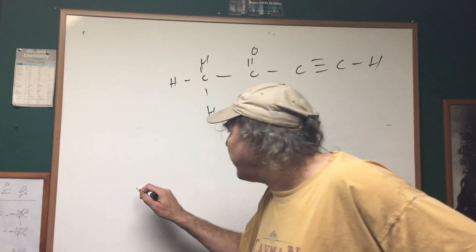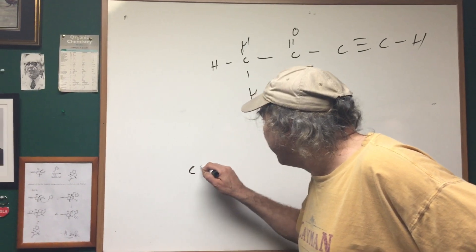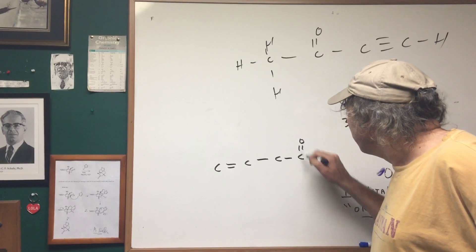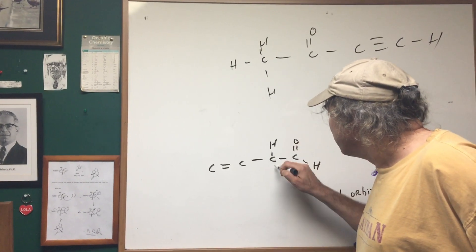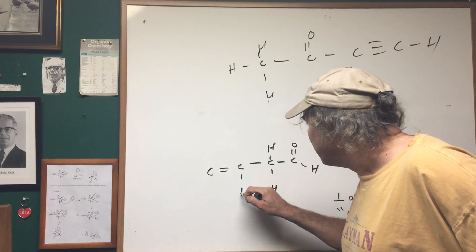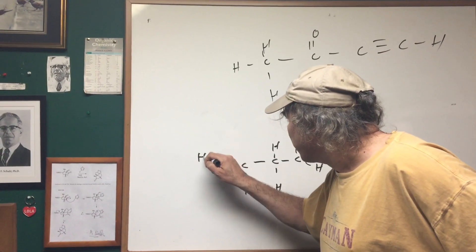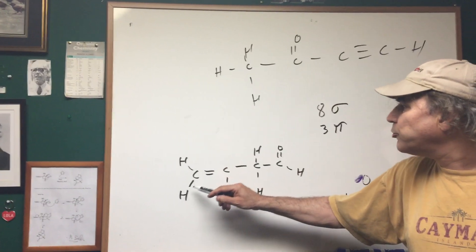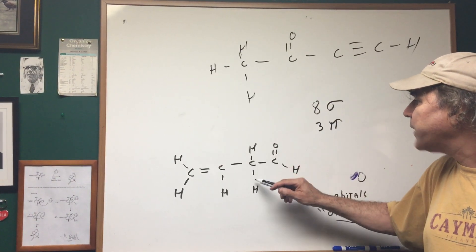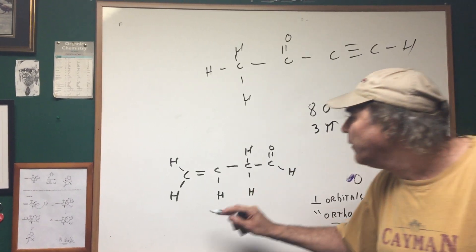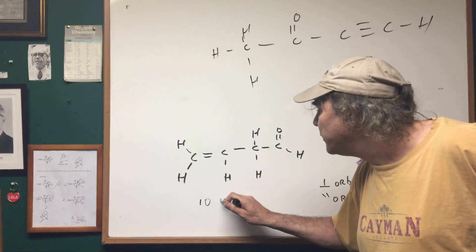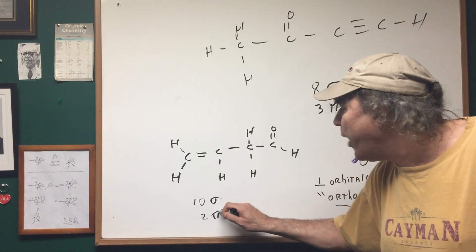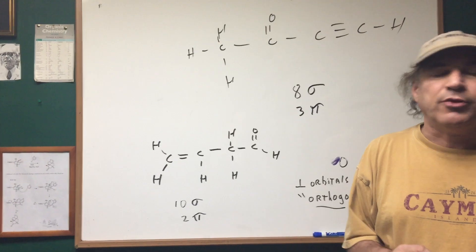I'll do one more. What if I gave you something like this and I said to you how many sigma and pi? Well one, two, three, four, five, six, seven, eight, nine, ten. There would be ten sigma. This is a pi and this is a pi and that would give me two pi.